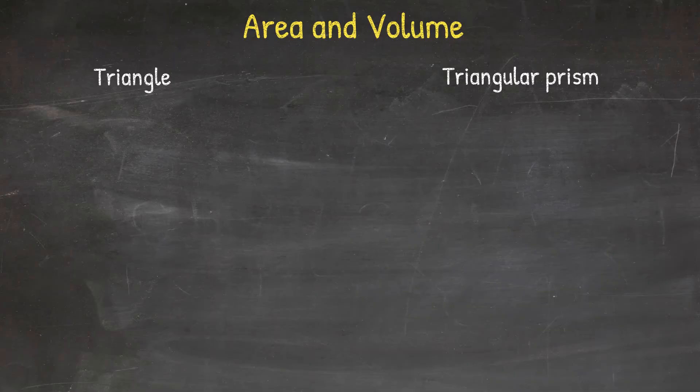The area for a triangle, which is a flat object, equals one-half times base times height. The height is drawn to the base at a 90-degree angle, and you can see on our graphic the base in green and height in blue.